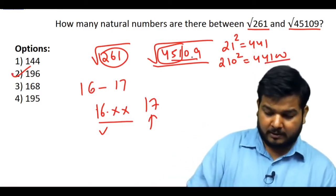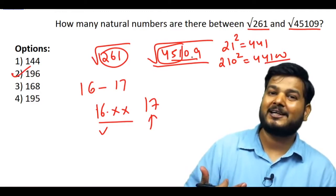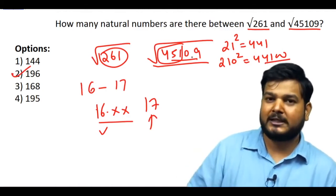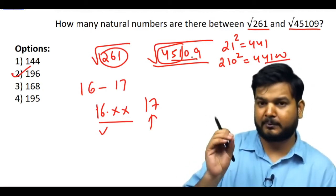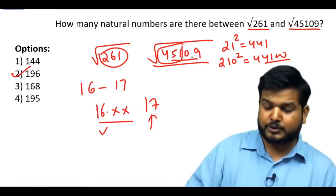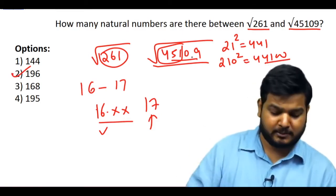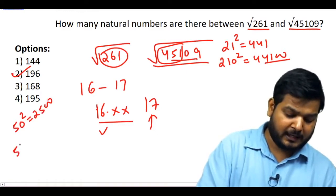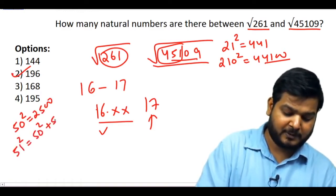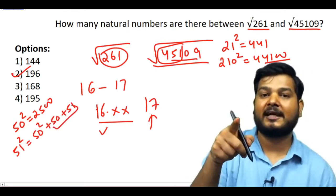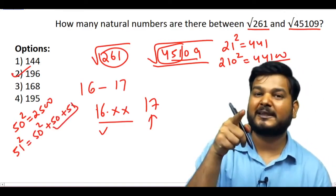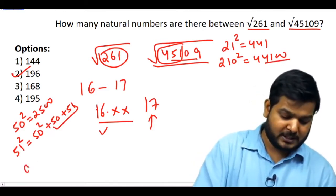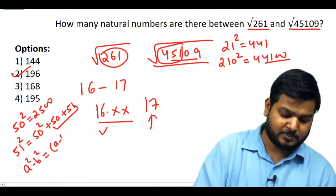Since 45109 is 1009 more than 44100, I need to go further. One key shortcut: if you know the square of any number, say 50² = 2500, then 51² = 50² + 50 + 51. This is not rocket science — you know this from class 6. It comes from the identity (a² − b²) = (a − b)(a + b).